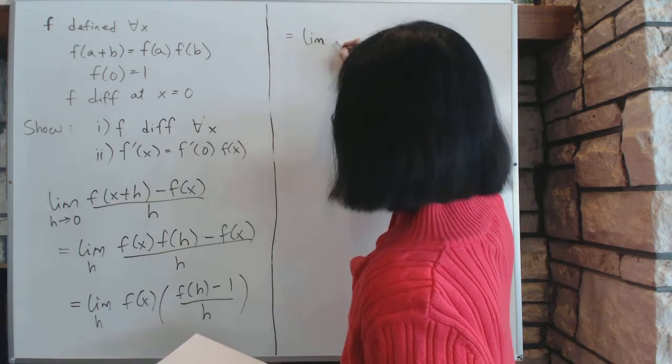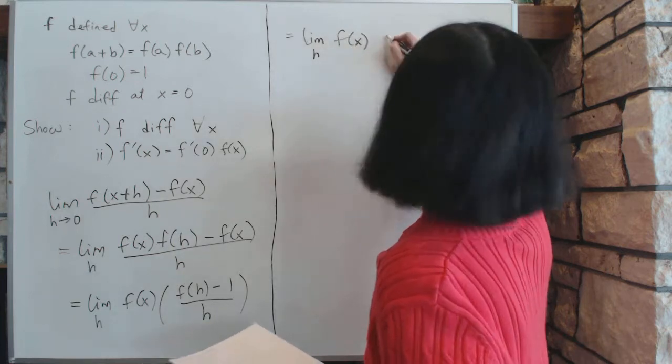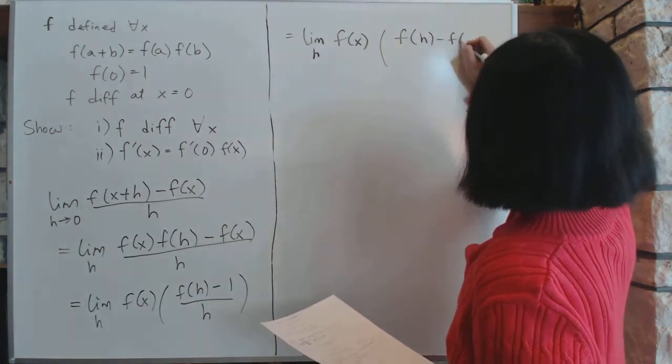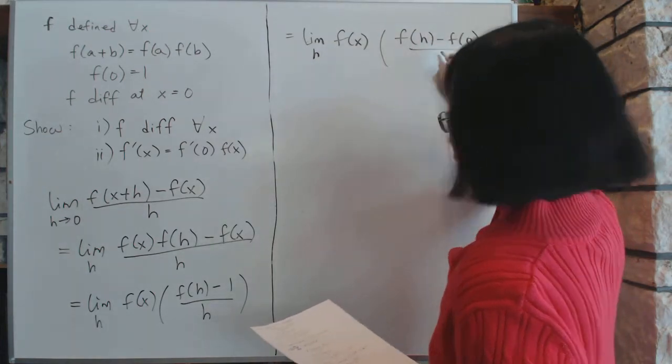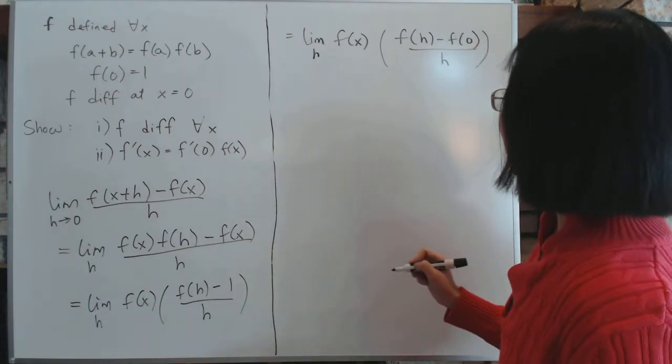The limit as h approaches 0 of f(x) times [f(h) - f(0)]/h.